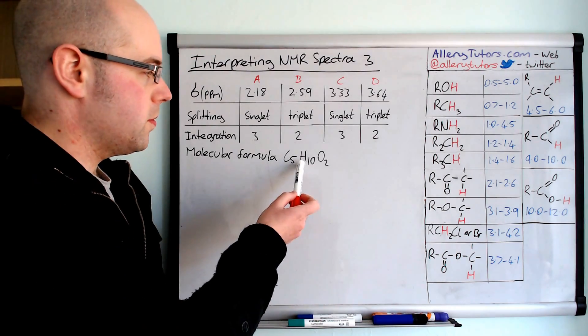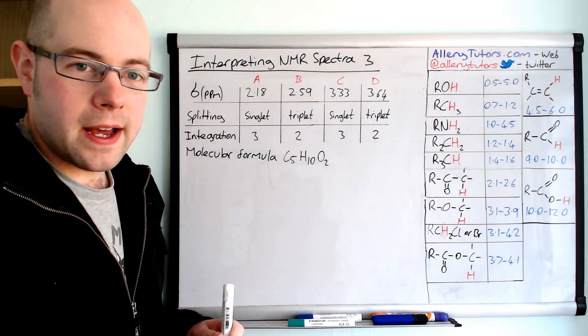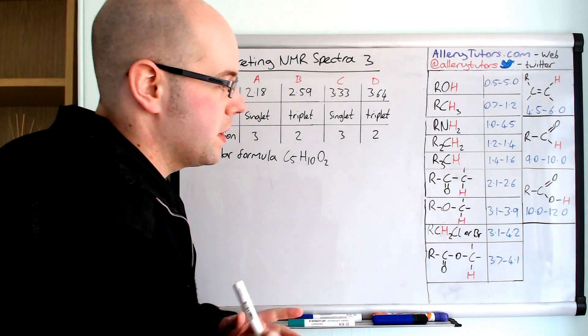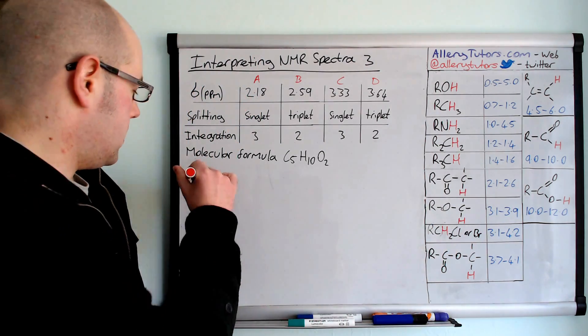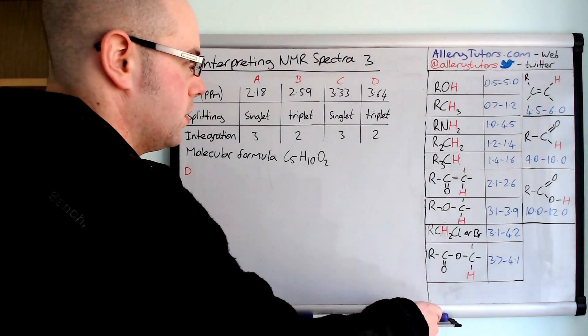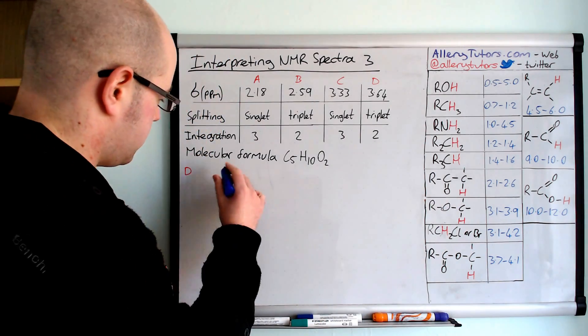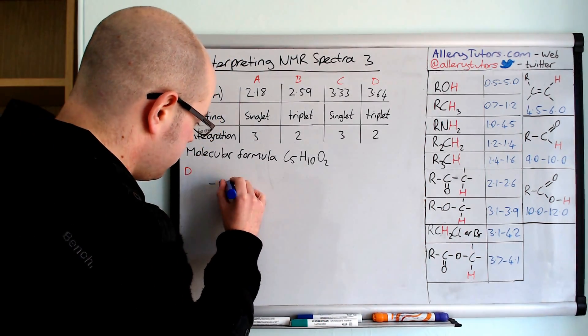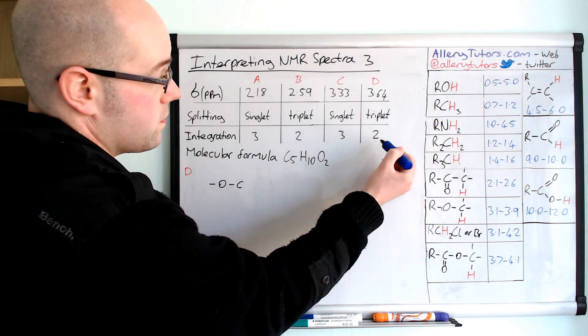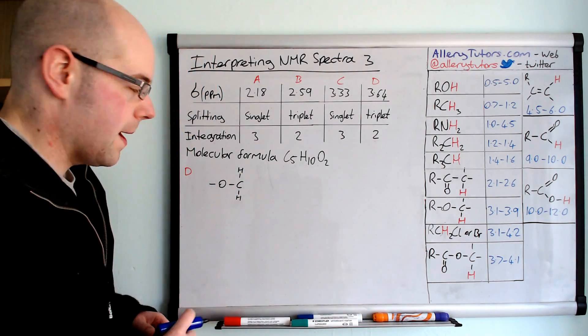We have to look at our molecular formula and you can see it can't be this one because this is shift data for a haloalkane or a molecule with a halogen in. Our molecule doesn't have a halogen, so it's got to be this one here. I'm going to take D first, which is this one, and write down what the molecule is. We'll look at the shift data and it tells us we have an oxygen with a CH on there. So I'm going to put the oxygen and we have a carbon. It says it's an integration of two, which tells us we have two hydrogens on this carbon itself.